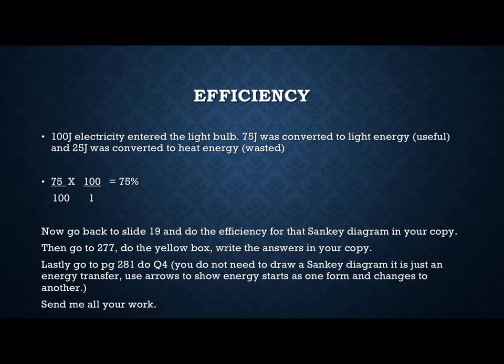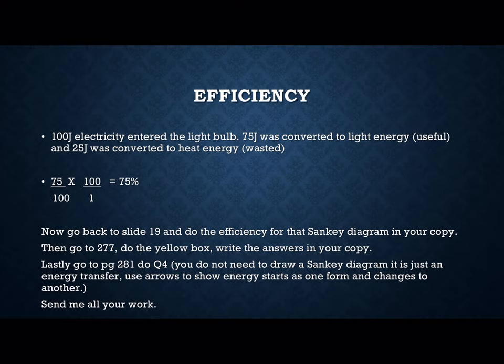How about this question? 100 joules of electricity entered the light bulb: 75 joules converted to light energy (useful), and 25 joules converted to heat energy (wasted). So it's useful over total amount times 100: 75 over 100 times 100 equals 75%. Now go back to slide 19 and do the efficiency calculation for that diagram into your copy — write the equation first, fill in the numbers, then do the calculation. When finished, go to page 277, do the yellow box, and write the answers into your copy.